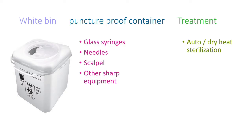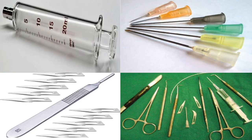The white colored bin is also called the puncture-proof container. Items placed in this bin include glass syringes, needles, scalpels, and other sharp equipment. The treatment method is autoclaving or dry heat sterilization.